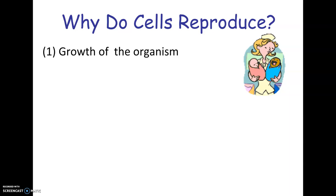So why do cells reproduce? Three reasons. One, it allows an organism to grow. An organism can only get bigger by making more cells, because cells are limited in how big they can get because of their surface area to volume ratio. So we can't just be made of giant cells — in order for an organism to get bigger, its cells must reproduce.